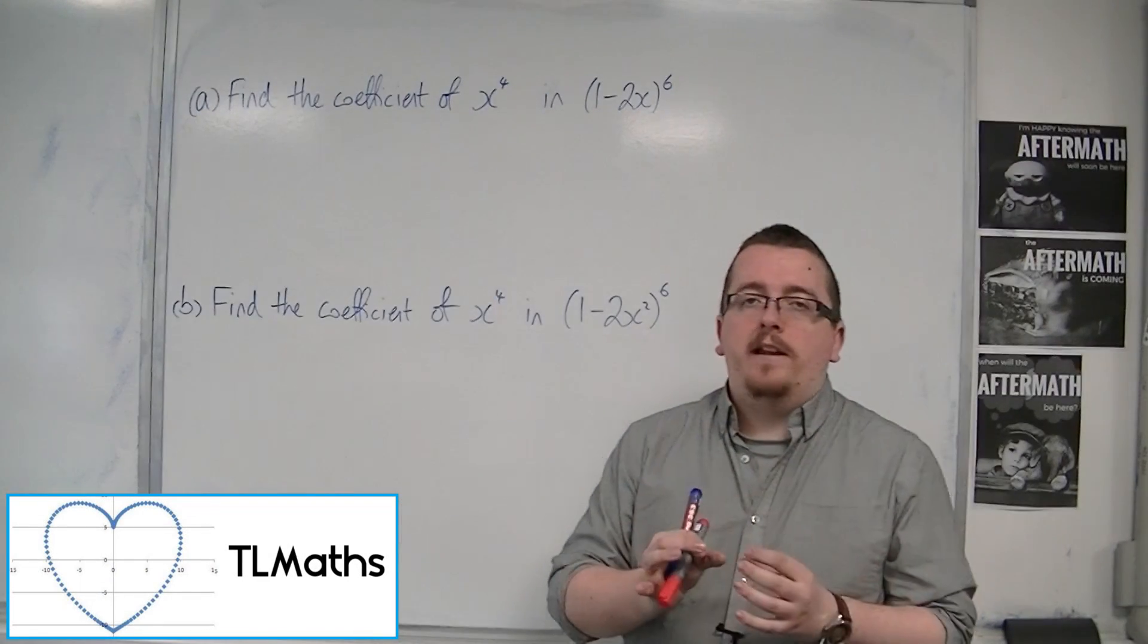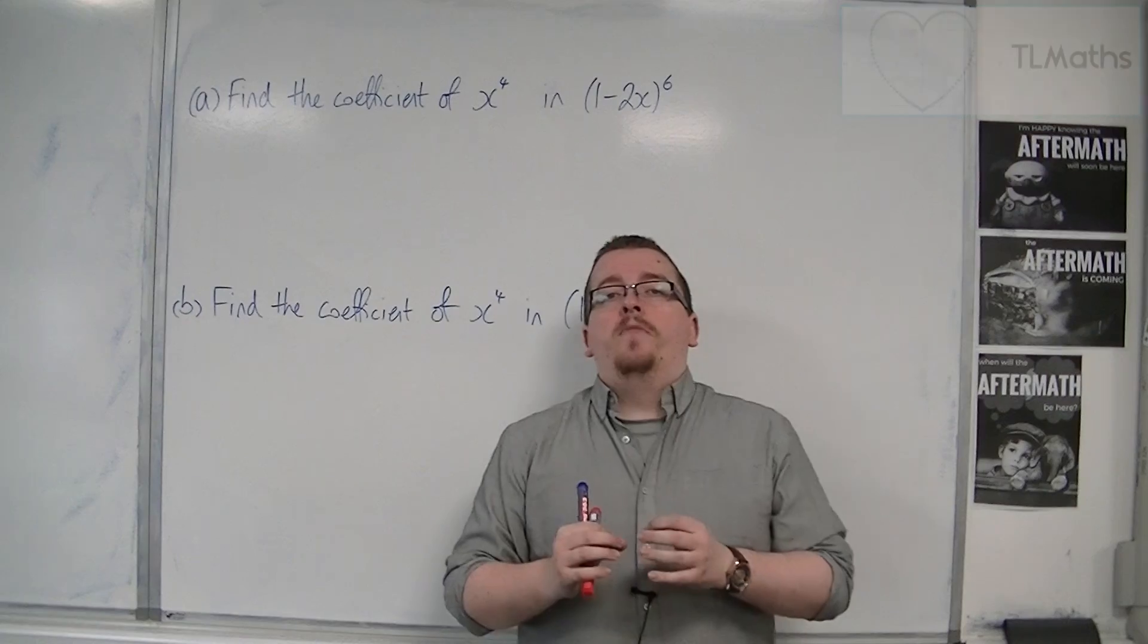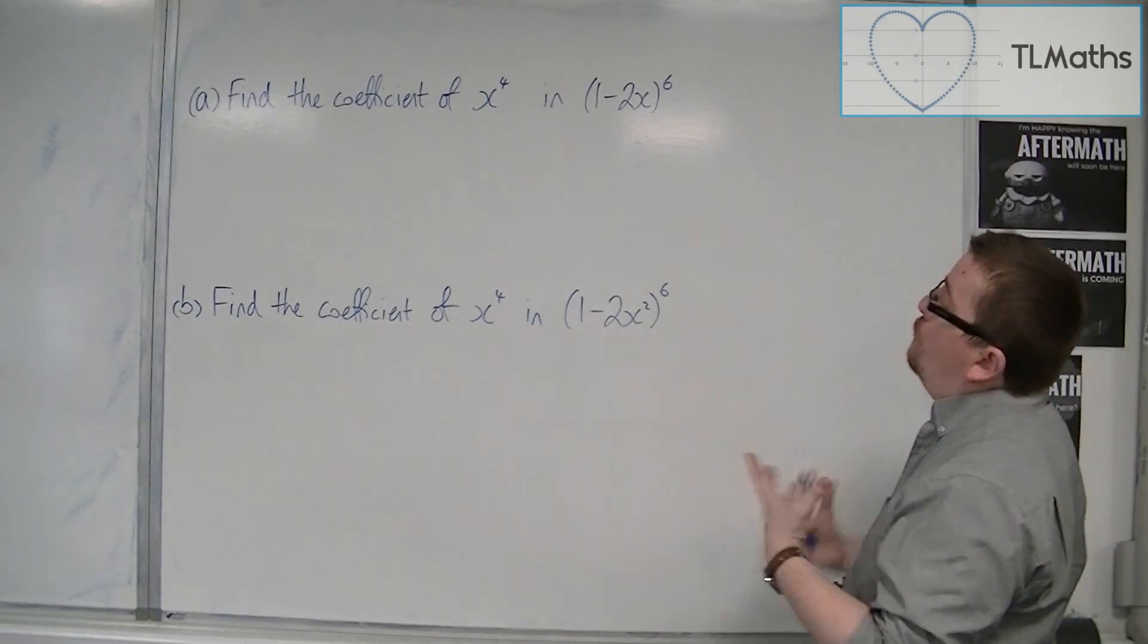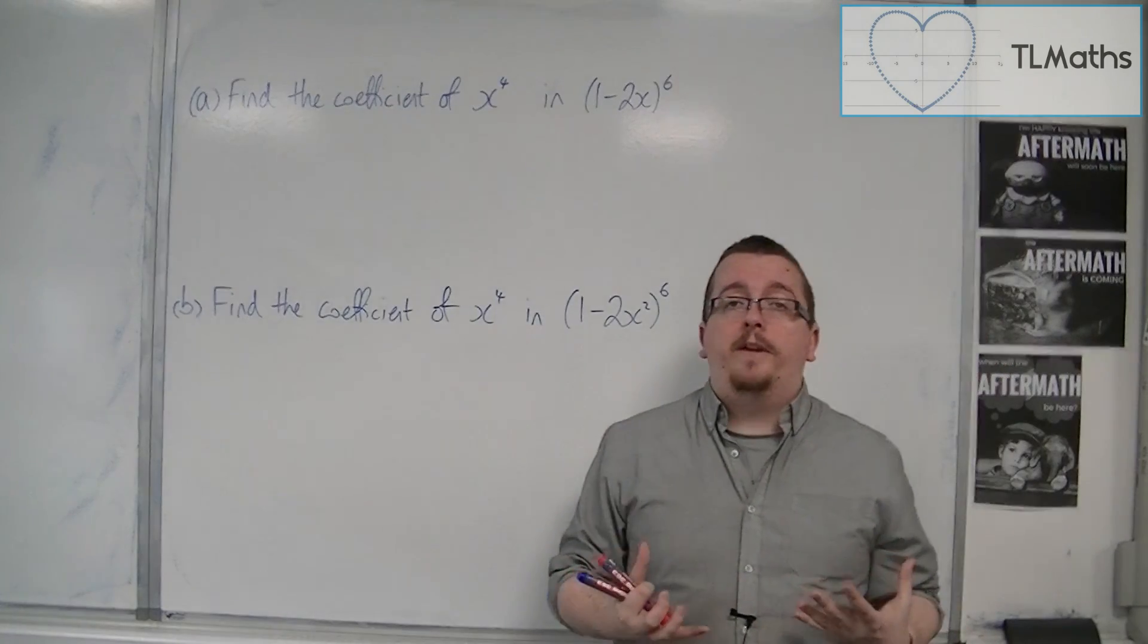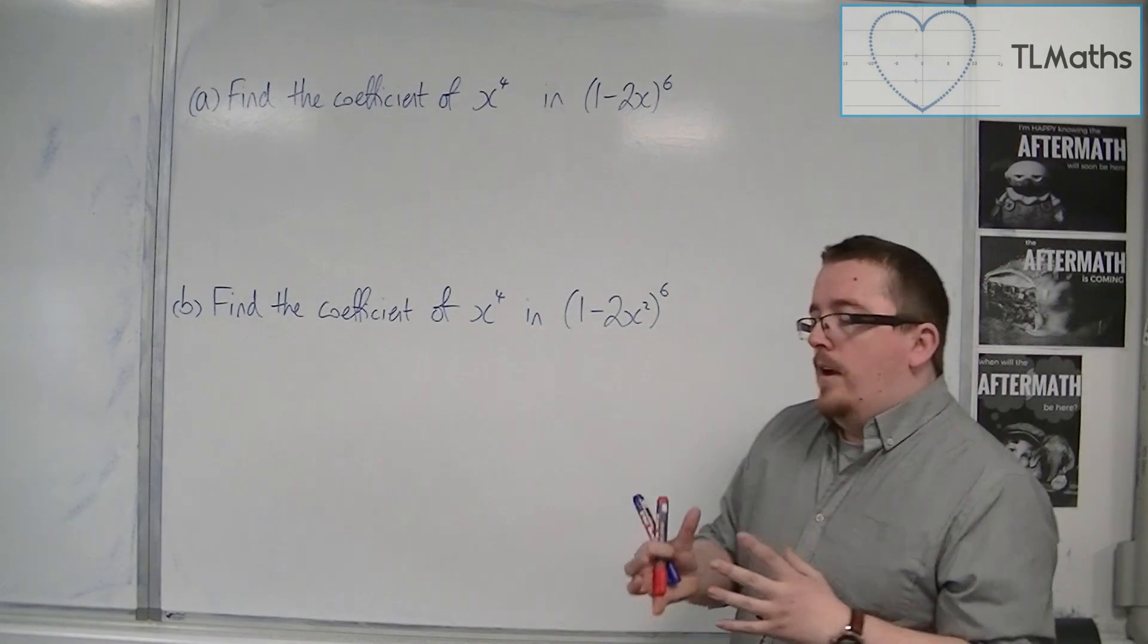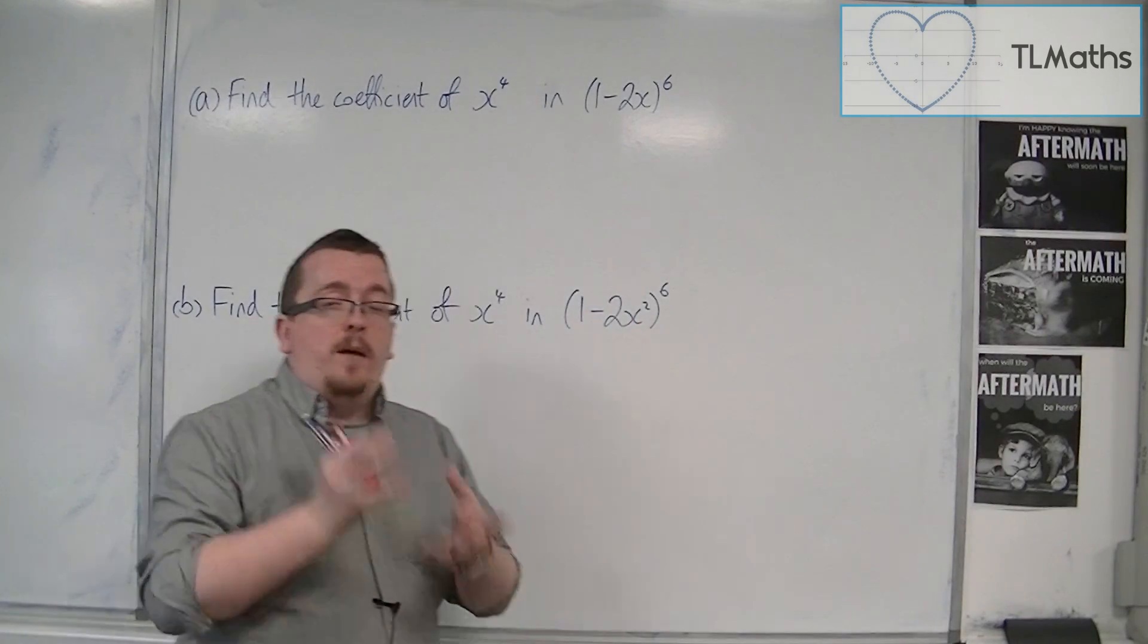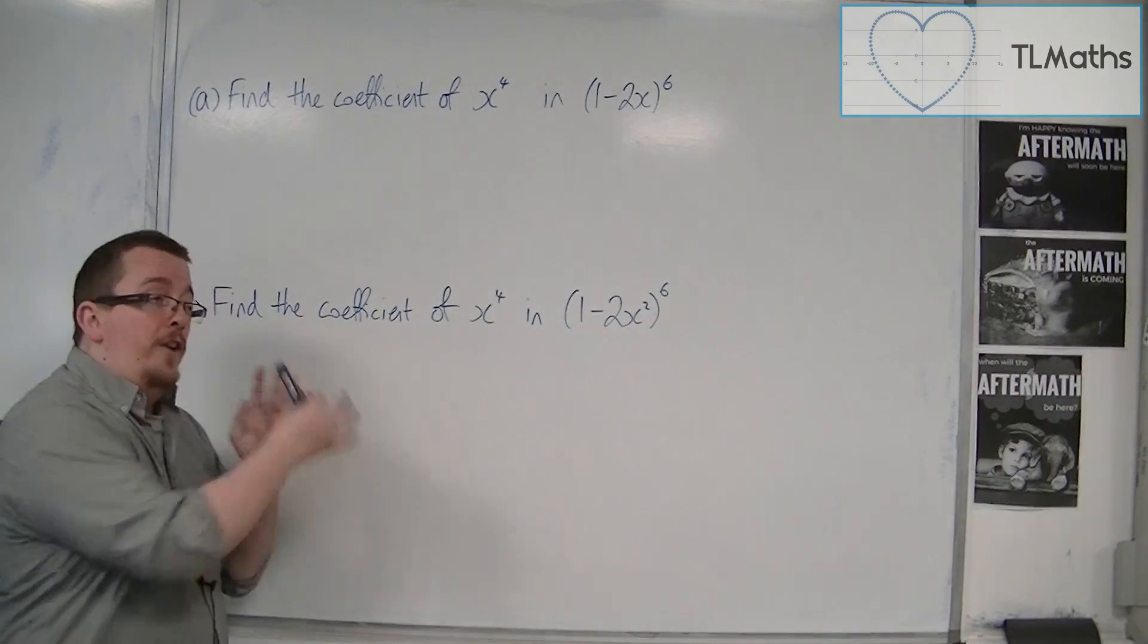How do we find particular coefficients without fully expanding? That's really the question we want to ask ourselves here. Is there a way of finding specific terms in a binomial expansion without having to find all of them?